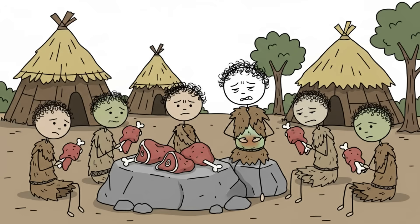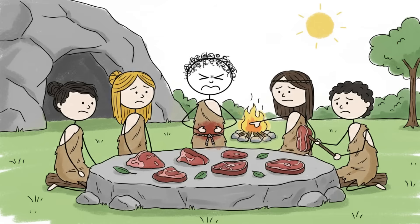Raw food requires an insane amount of energy and time for your body to break down and extract calories. Try spending 8 hours a day chewing tough roots and raw muscle. You'd need a massive gut and gigantic jaw muscles, much like our primate cousins.